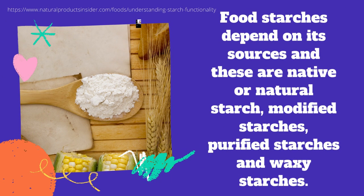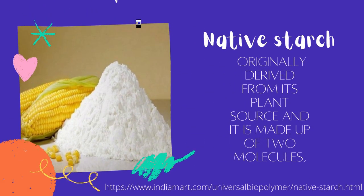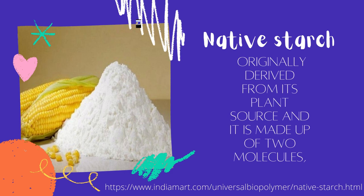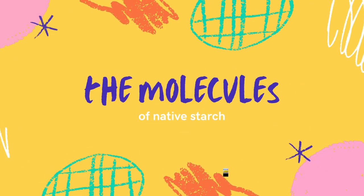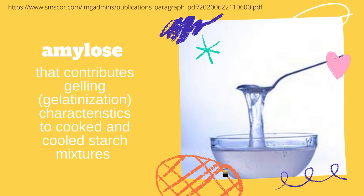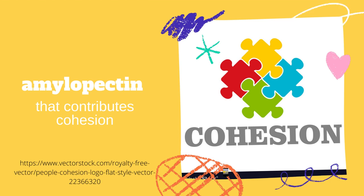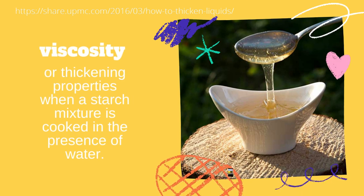Food starches depend on their source, and these are native or natural starch, modified starches, purified starches, and waxy starches. Native starch is originally derived from its plant source and is made up of two molecules: amylose, which contributes gelling or gelatinization characteristics to cooked and cold starch mixtures, and amylopectin, which contributes to the cohesion of food and thickening properties when the starch mixture is cooked in the presence of water.